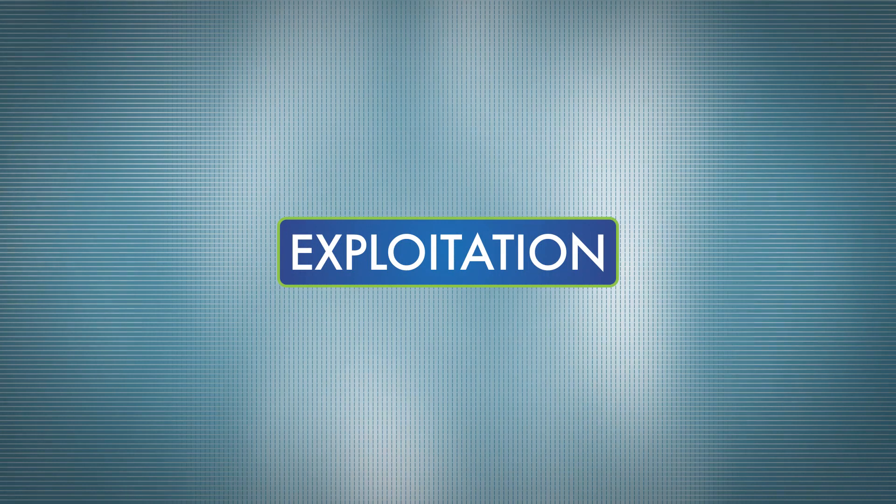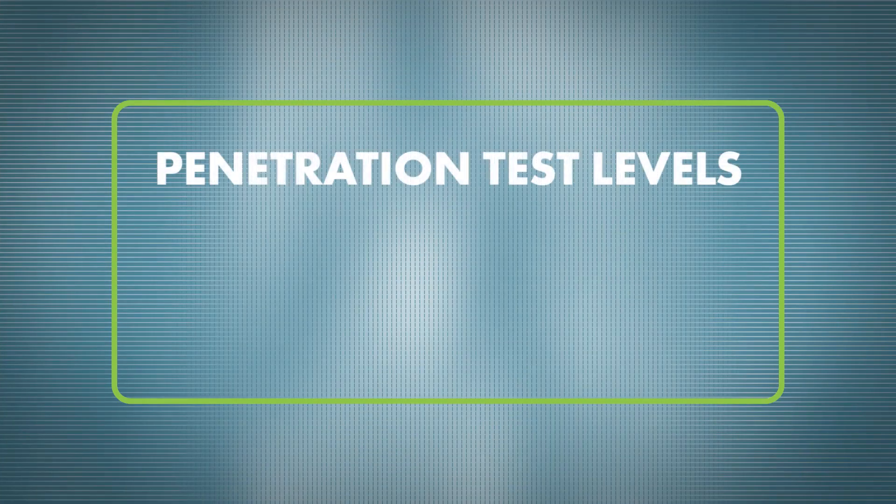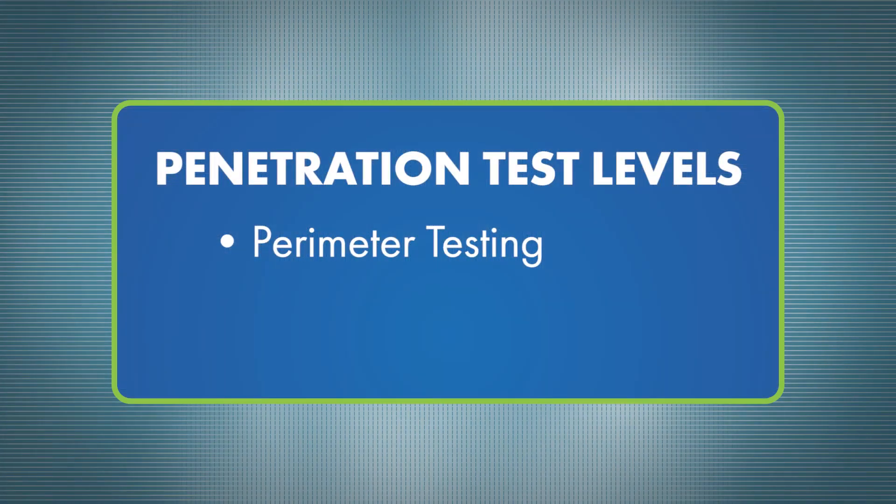Exploitation refers to exploiting weaknesses in the system with the purpose of compromising the network and/or stealing stored information. It'll be necessary to define the extent to which a security analyst will attempt to penetrate a system. There are several different levels of testing that could include perimeter testing. This is where the tester pinpoints weaknesses, but does not try to attack or read confidential information.